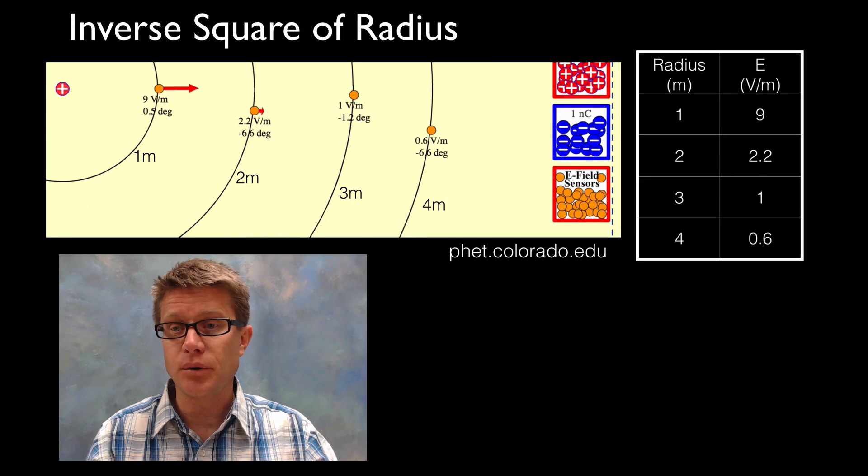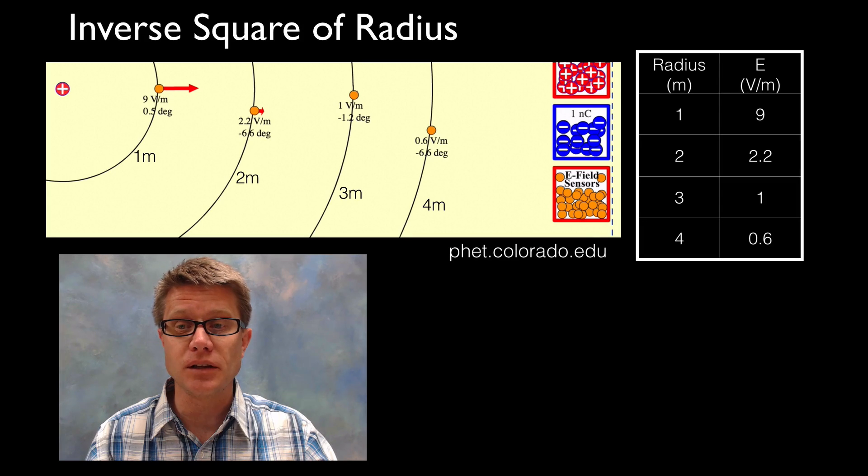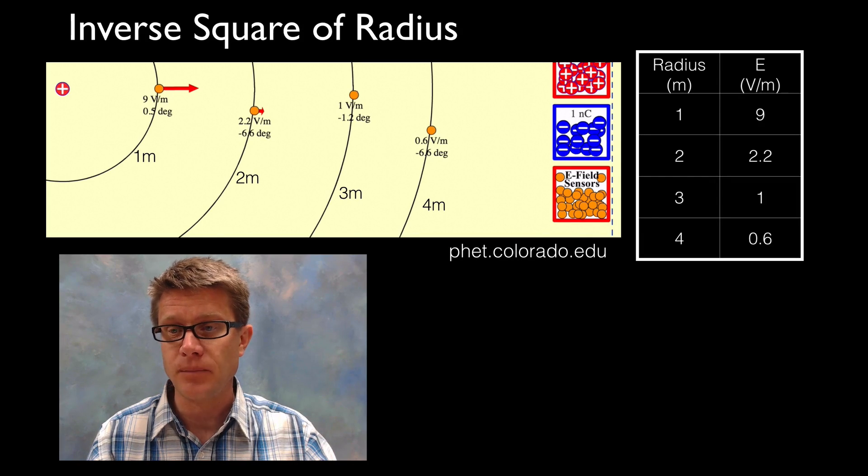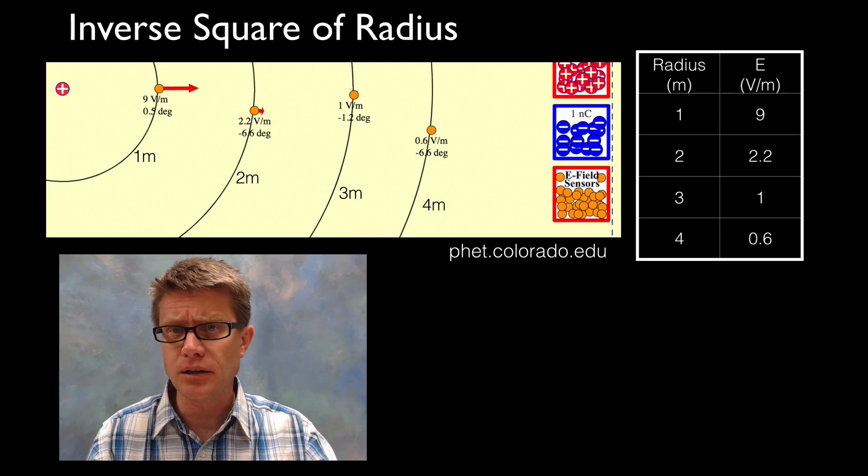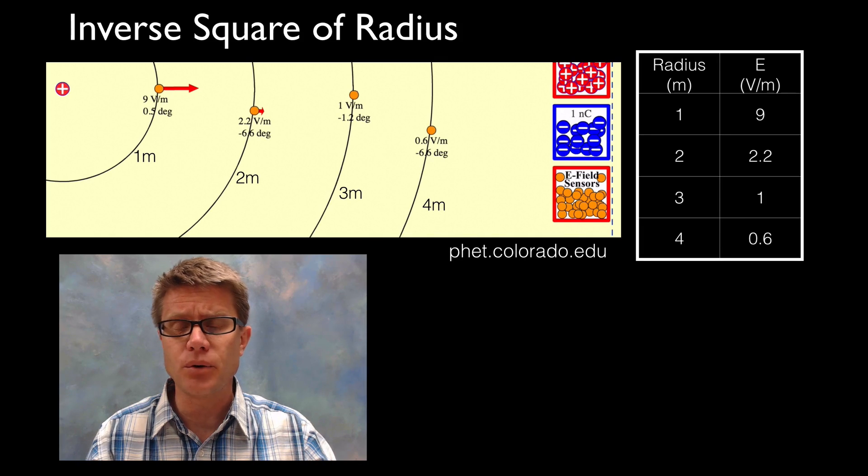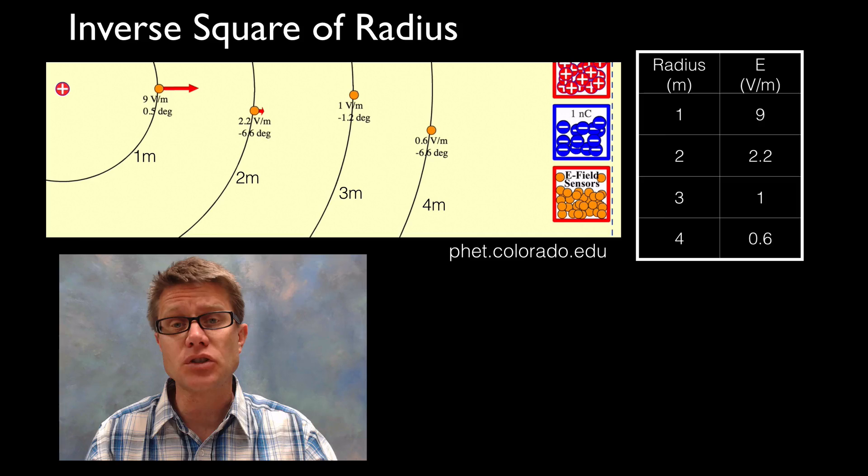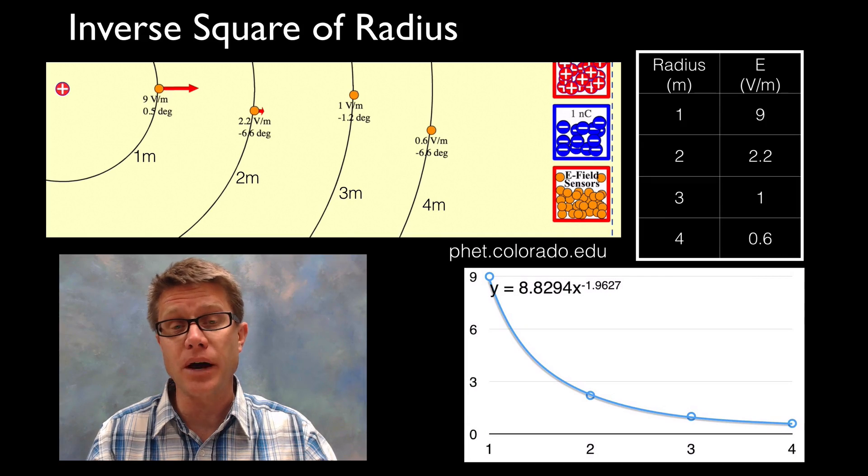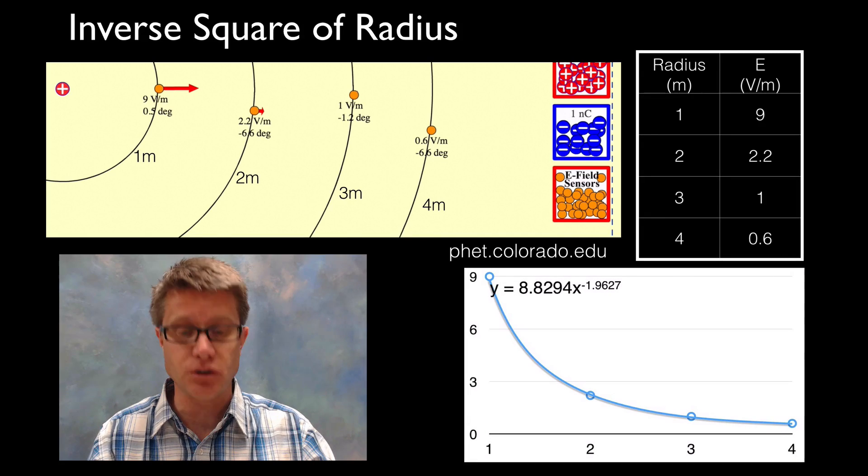So the next thing I did is I put those in a table. So we have got the radius on the left side: 1, 2, 3 and 4. And then we have got our electric field strength on the right side. So you can see it does not look like it is a linear relationship. It is dropping off pretty quickly. And so what you can do is graph that. I just used a spreadsheet to graph it.